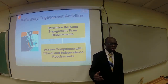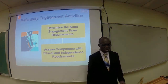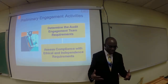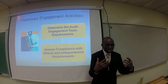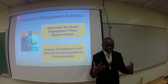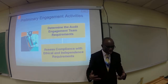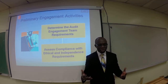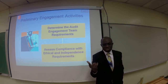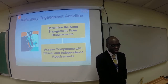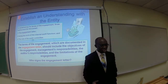Moving along, let's take a look at some preliminary engagement activities. The first thing is to determine the audit engagement team requirements — what requirements are necessary for this team to complete the audit. Then we assess compliance with ethical and independence requirements, which is very important in terms of whether to take on the engagement.